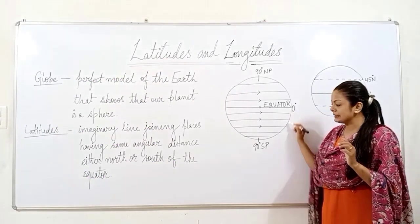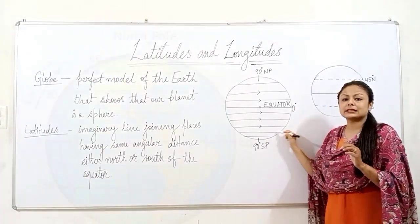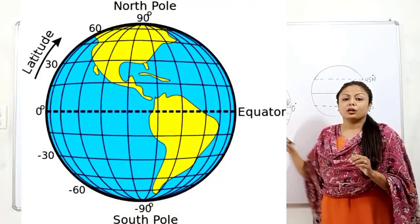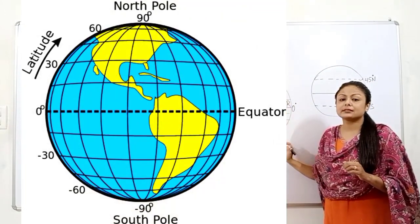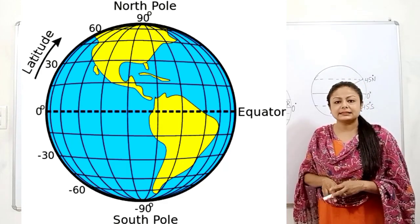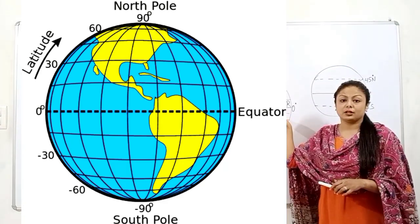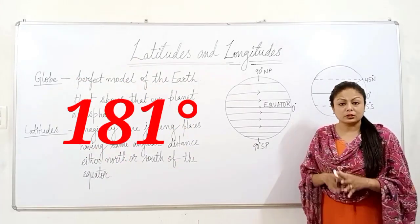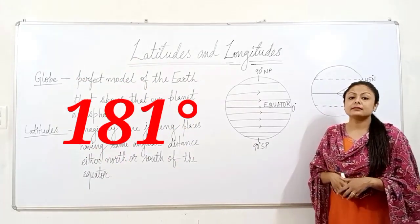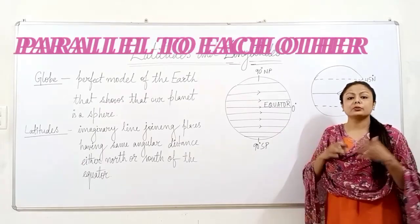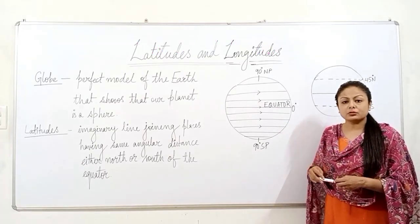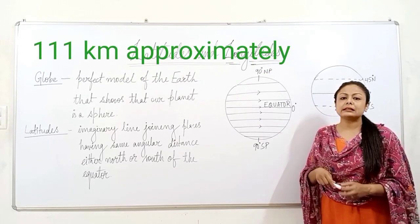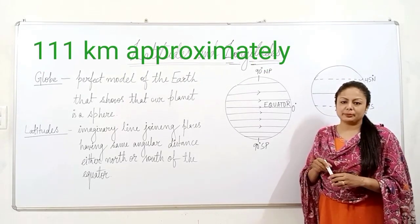There are 90 latitudes in the southern hemisphere and 90 latitudes in the northern hemisphere — 90 in the north and 90 in the south, making a total of 180 plus the equator. So there are 181 latitudes in total. They are all parallel to each other, and the distance between two latitudes is approximately 111 kilometers.